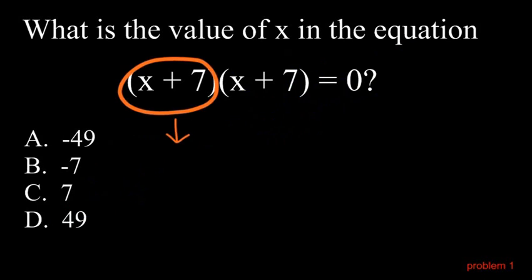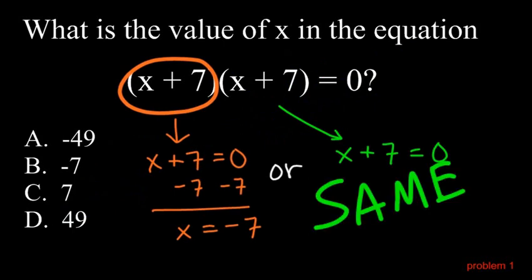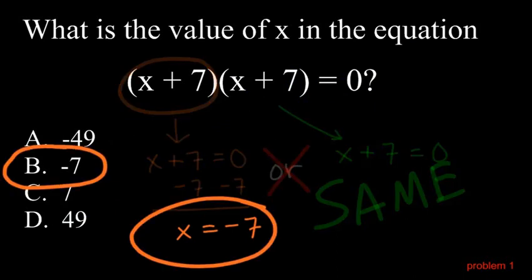Alright. Well, the first thing, x plus seven, could be equal to zero. If you solve for x, you get negative seven. But there's another situation. x plus seven could equal zero. Hopefully you notice, though, that it's actually the same thing. So there's no or about it. There's only one possible answer. x is negative seven.